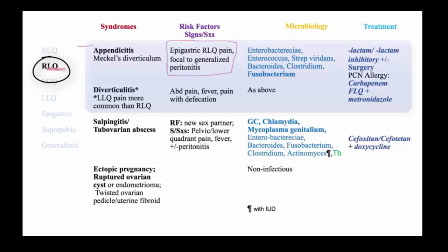The bacteriology of appendicitis reflects the lower intestinal tract, with Enterobacteriaceae, Enterococcus, Strep viridans, Bacteroides, Clostridium, and Fusobacterium. The importance of Fusobacterium is increasingly recognized as a potential common thread in many appendicitis cases.